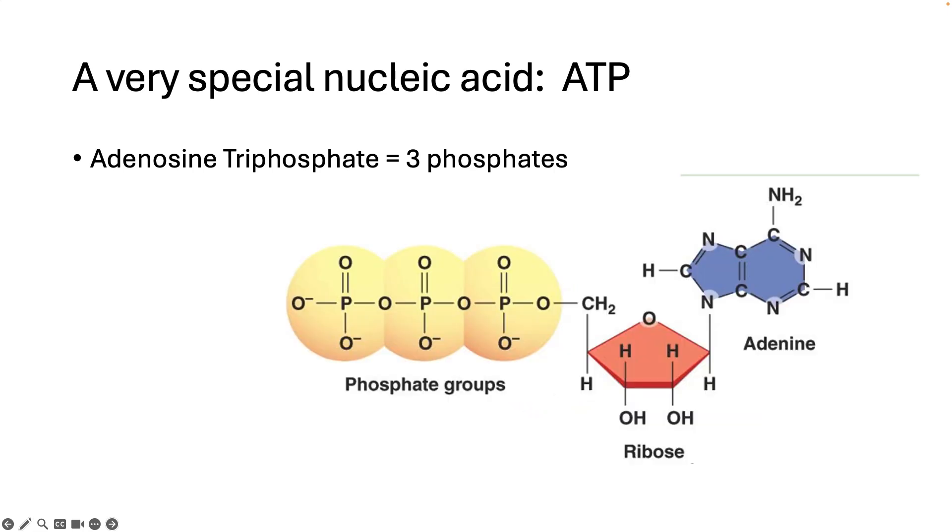Here we see a normal nucleotide with just one phosphate. ATP has three phosphates. Remember that phosphates are negatively charged and like charges repel one another. So these phosphates are just dying to get away from each other.